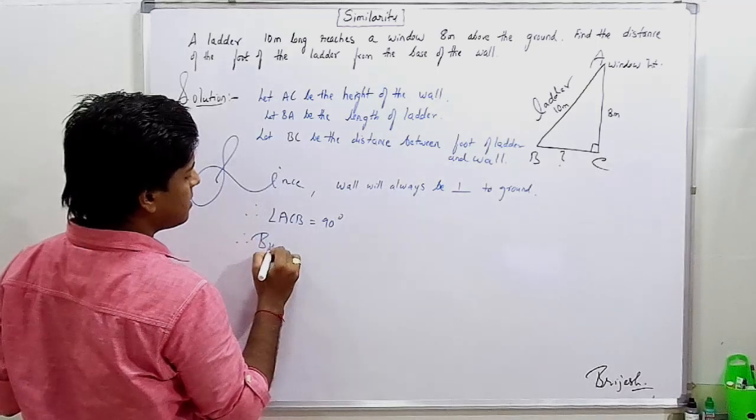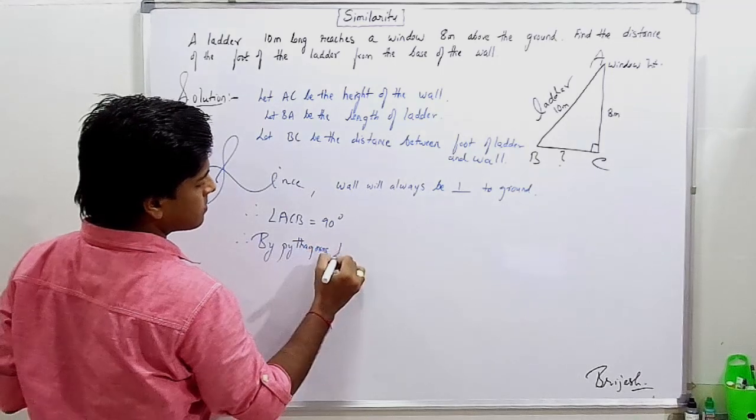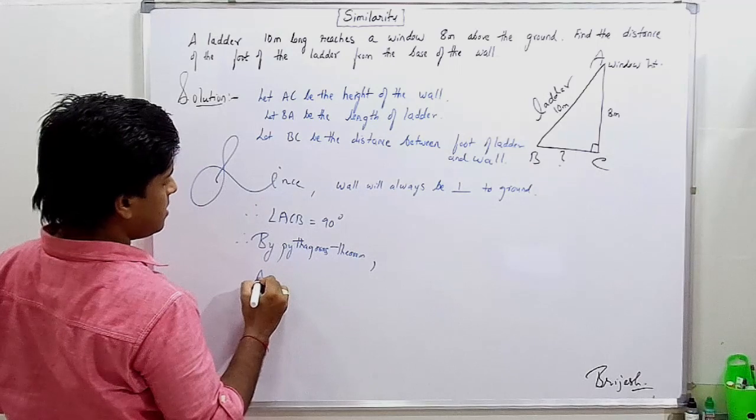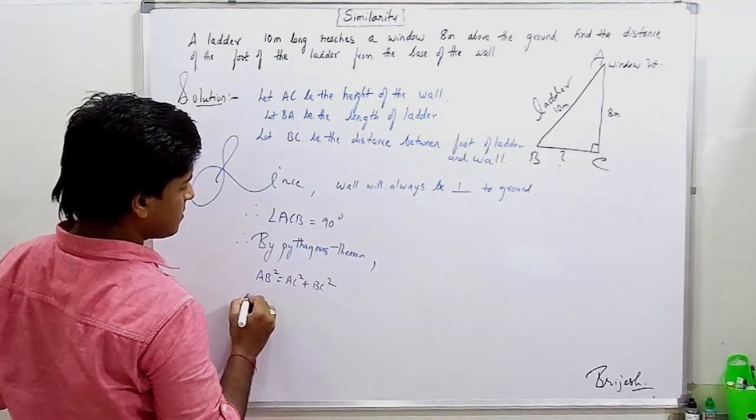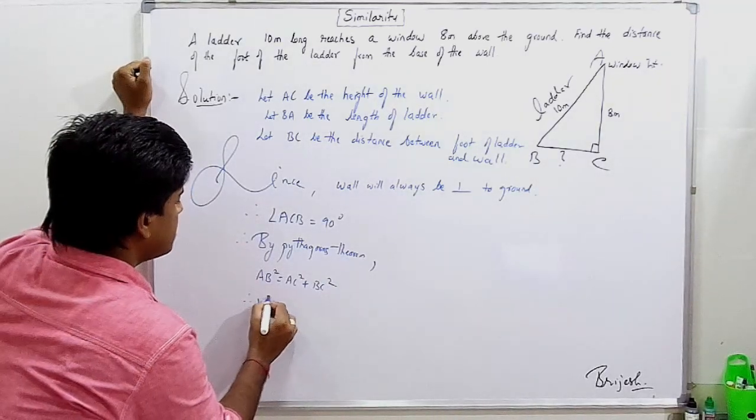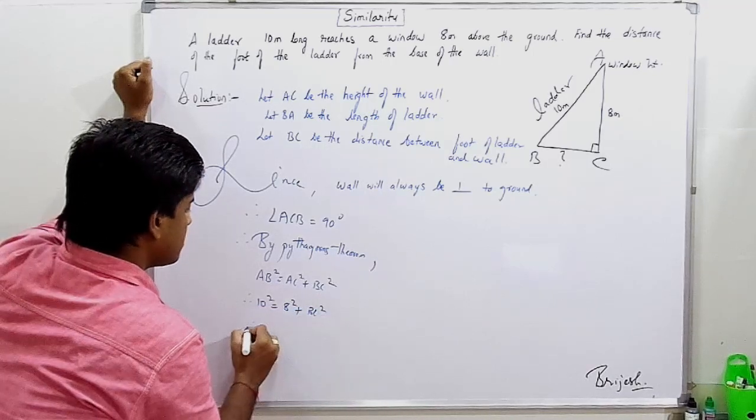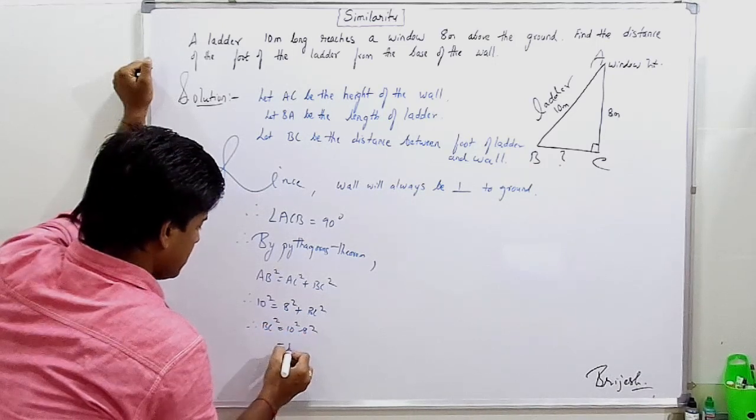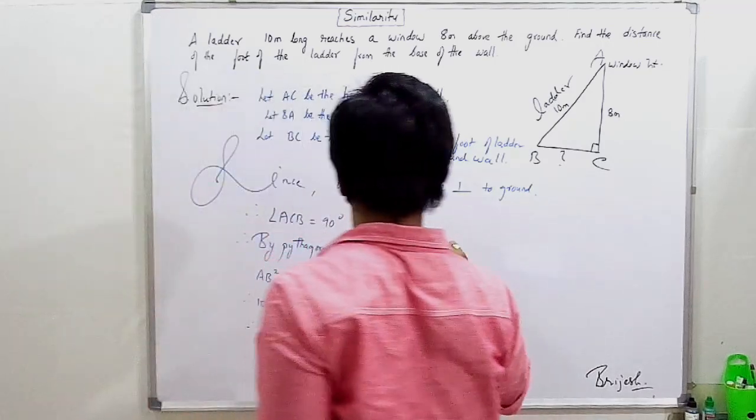Therefore, by Pythagoras theorem, BA square equals AC square plus BC square. 10 square equals 8 square plus BC square. BC square equals 10 square minus 8 square. 100 minus 64 is equal to 36.